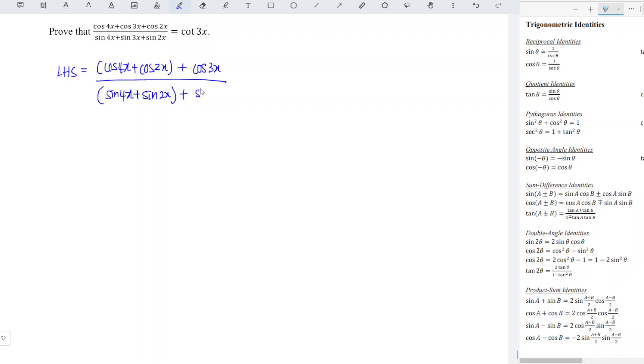And I'm going to let a be equal to 4x, b be equal to 2x. So a plus b divided by 2 is equal to 3x, and a minus b divided by 2 is equal to x.